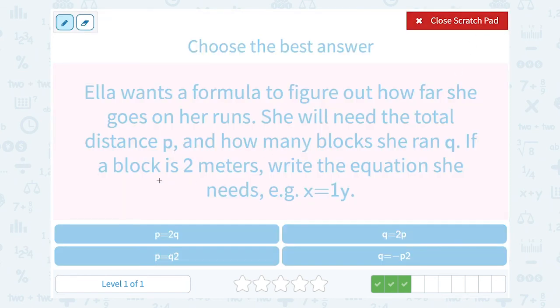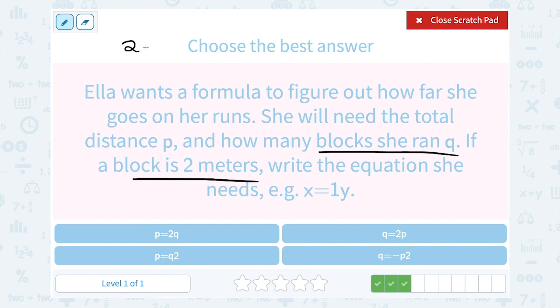Well, if each block is 2 meters and she ran Q blocks, that means the meters she ran is 2 times as many blocks as she ran, or 2Q.